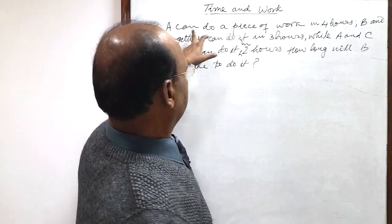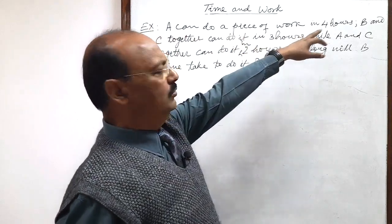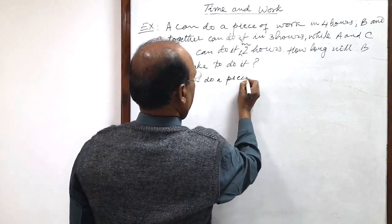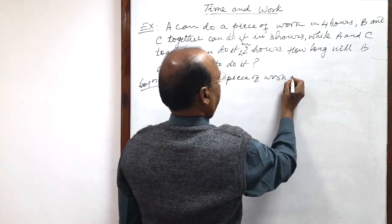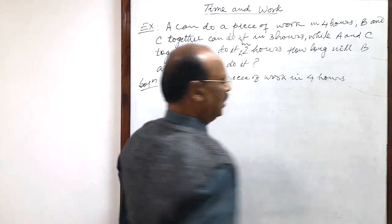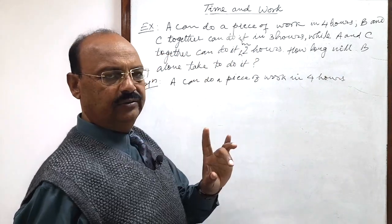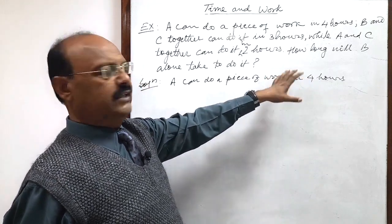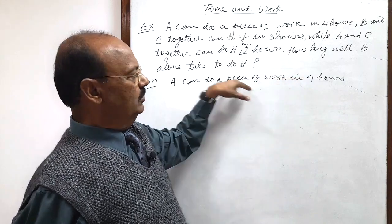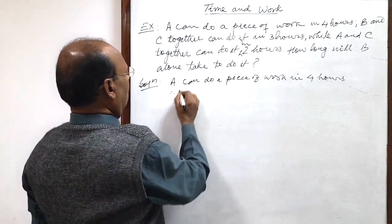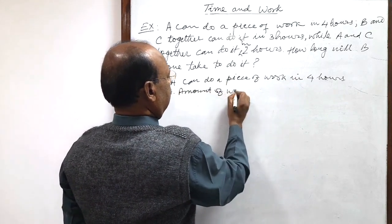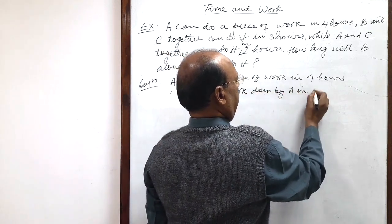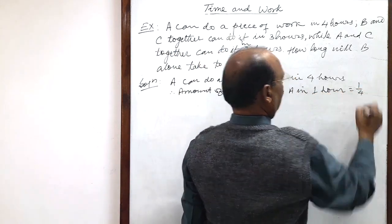First of all we will use this line: A can do a piece of work in 4 hours. So, how much work will A do in 1 hour? Reciprocal of 4, which is 1 by 4, as we have discussed in the introduction of this topic and done many equations of the same pattern. Therefore, the amount of work done by A in 1 hour is equal to 1 by 4.